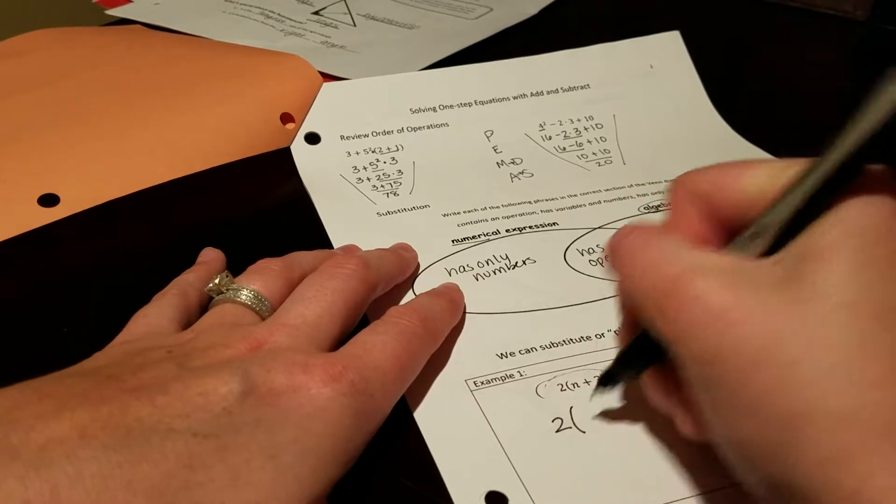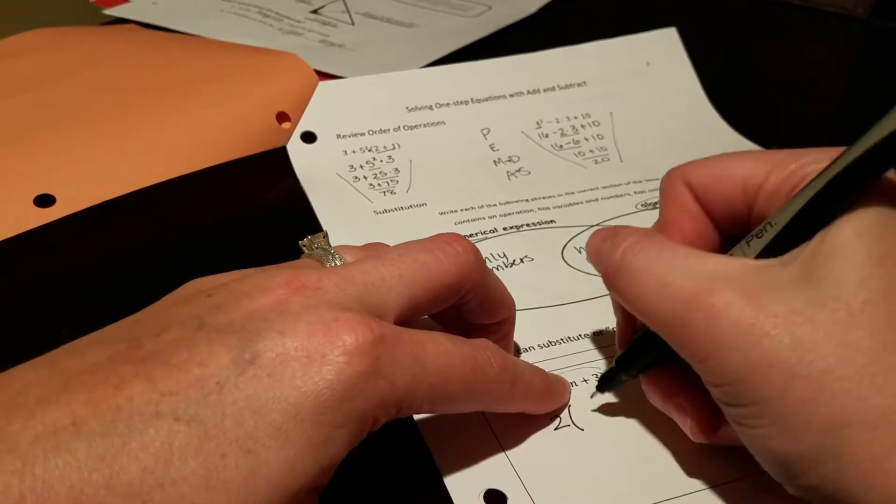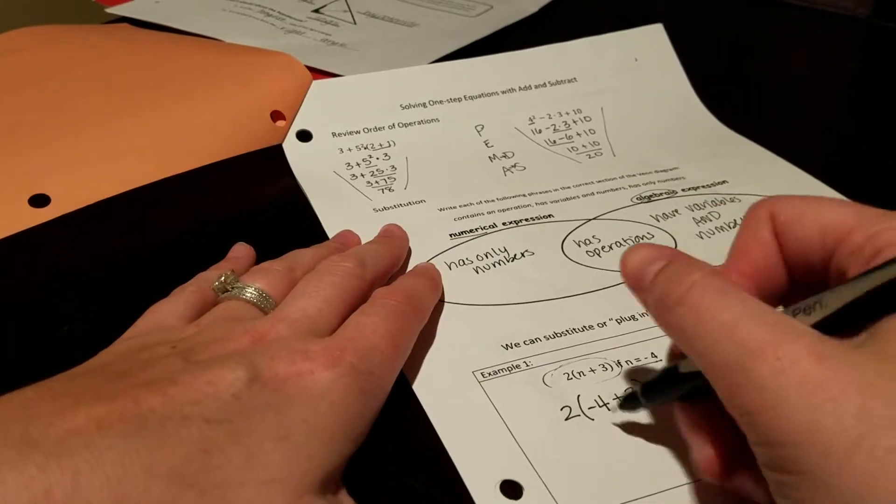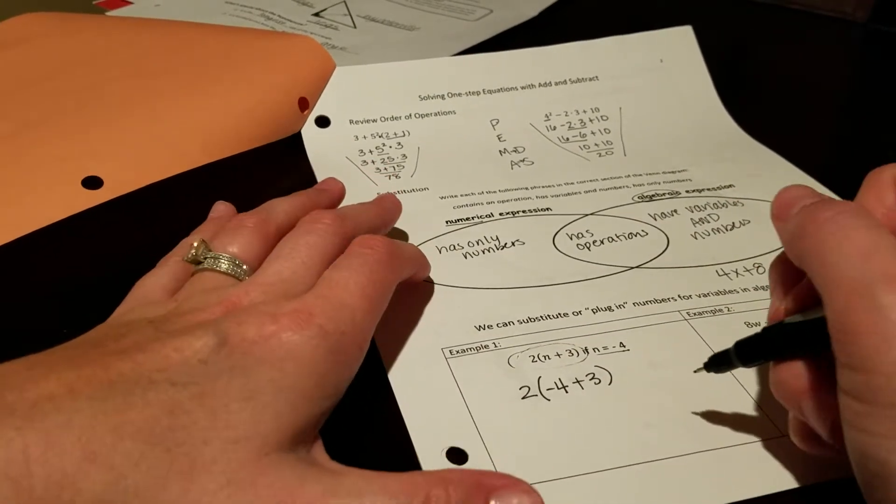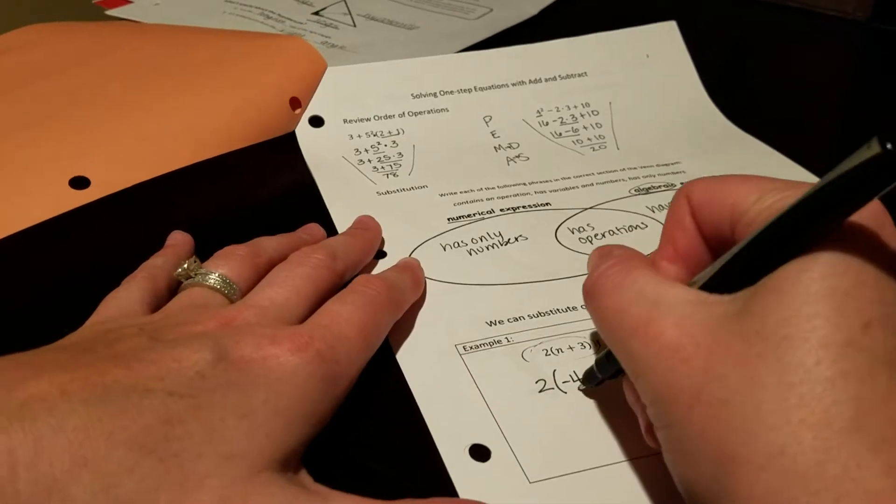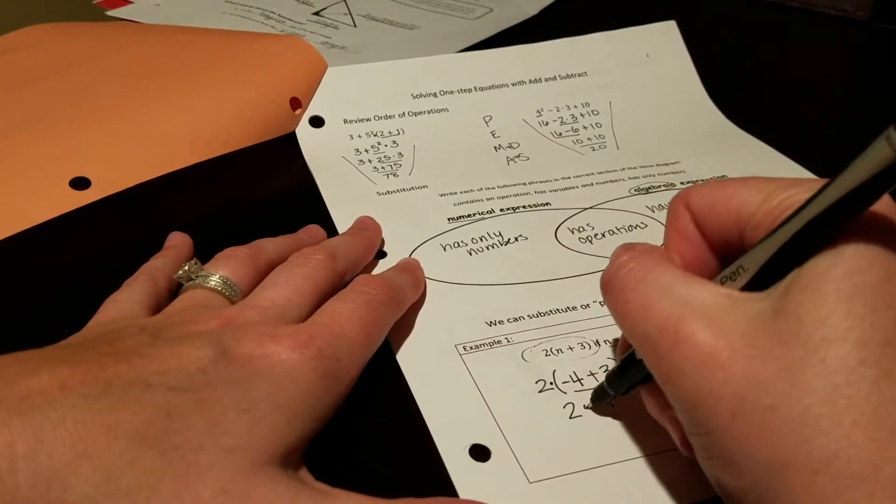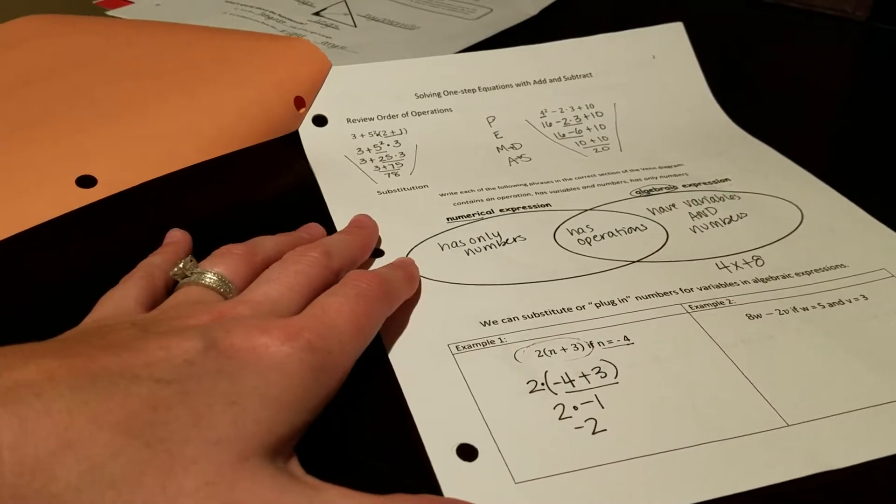So 2, parentheses, n. Instead of n, I'm putting in a negative 4 plus 3. Go ahead and treat it now since it's a numerical expression at this point. Just use PEMDAS. Negative 4 plus 3 is negative 1. Hiding multiplication here and 2 times negative 1 is negative 2.